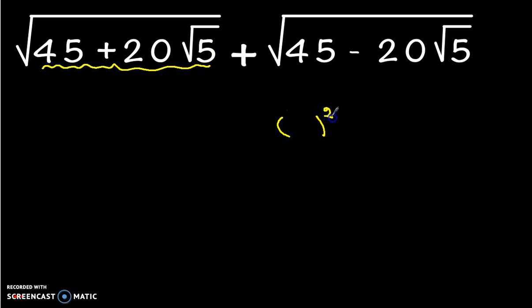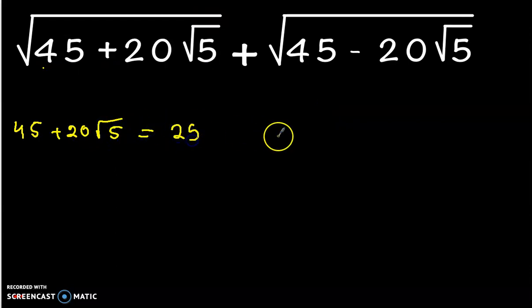Then this square will cancel the nested radical here. So let's see what we can do. Now, 45 plus 20√5 equals 25 plus 20, and 20 can be written as 2 times 5 times 2, and we have here √5.